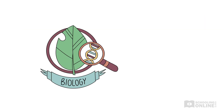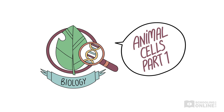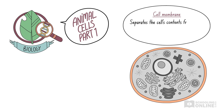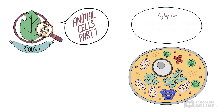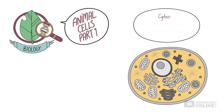Let's revise what we've covered in this lesson. Firstly, it is important that you remember the components of an animal cell, and secondly, you should know the function of each component. The cell membrane is a phospholipid bilayer that separates the cell's contents from their surroundings and is selectively permeable, which means it allows some substances to enter the cell but not others. The protoplasm consists of everything inside the cell membrane, including the cytoplasm and the nucleus. The cytoplasm is the portion of the protoplasm that excludes the nucleus. The cytosol is the intracellular fluid composed of water, salts, enzymes and organic molecules that organelles float in.